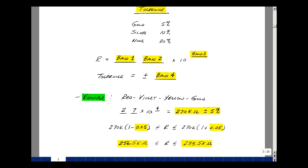Suppose we had a red, violet, yellow, and gold set of bands. Well, on top here, red is two, violet is seven, and yellow is four, and gold is five percent. What that implies is that this is a 270k ohm resistor, plus or minus five percent.